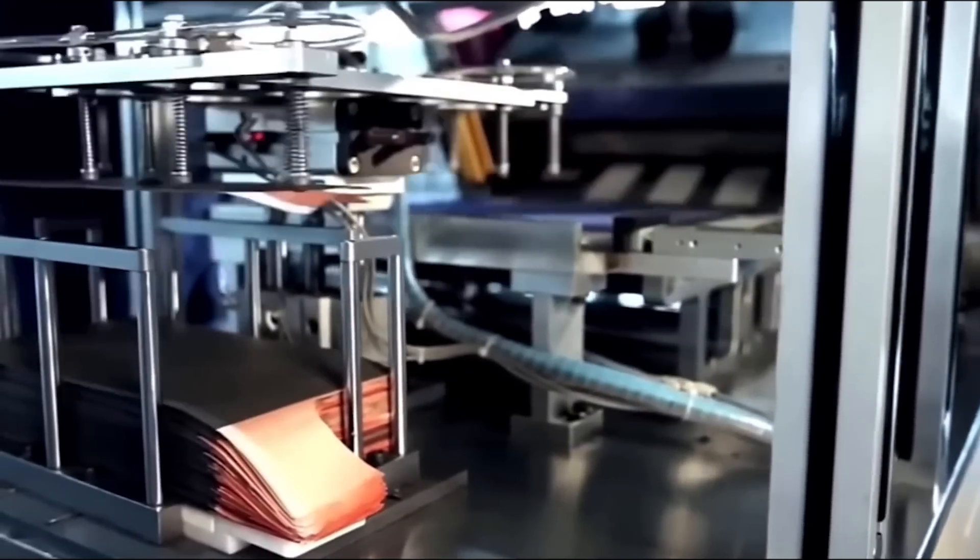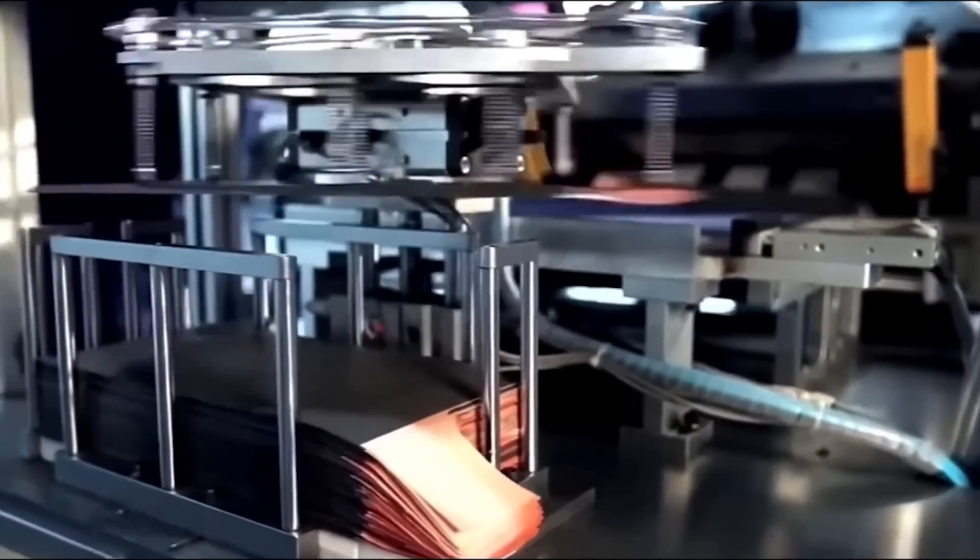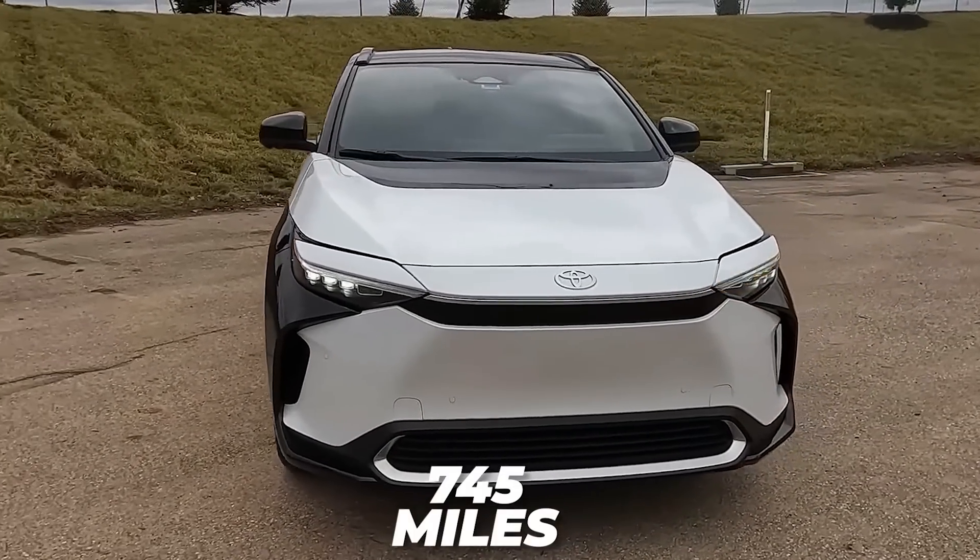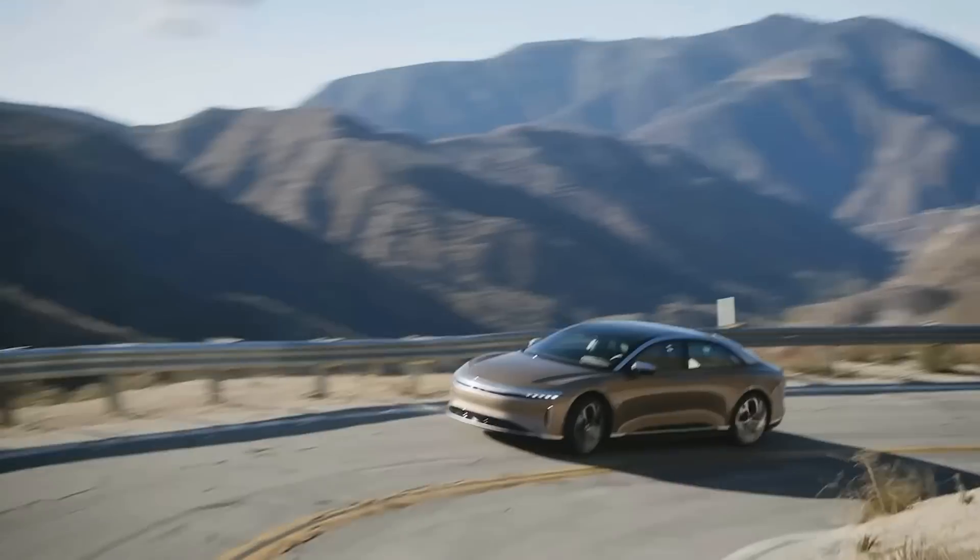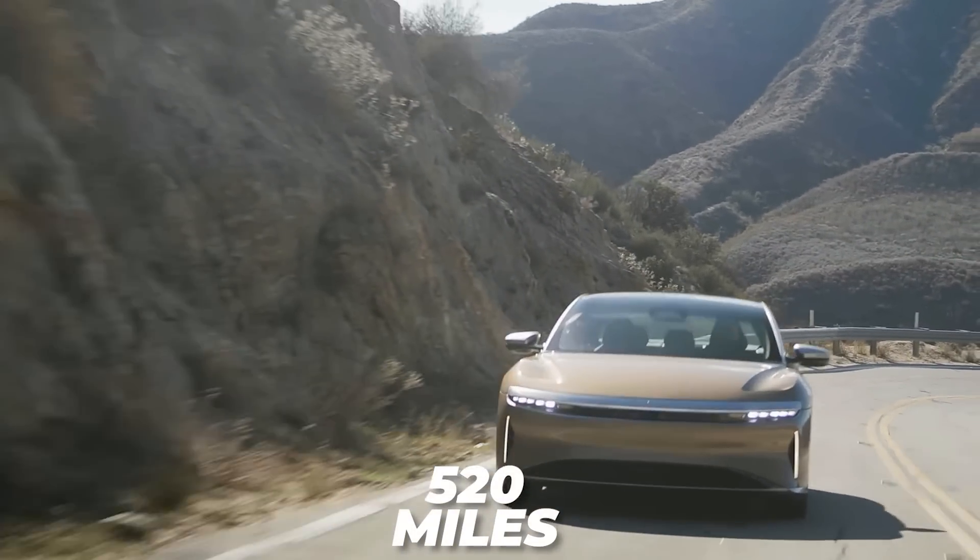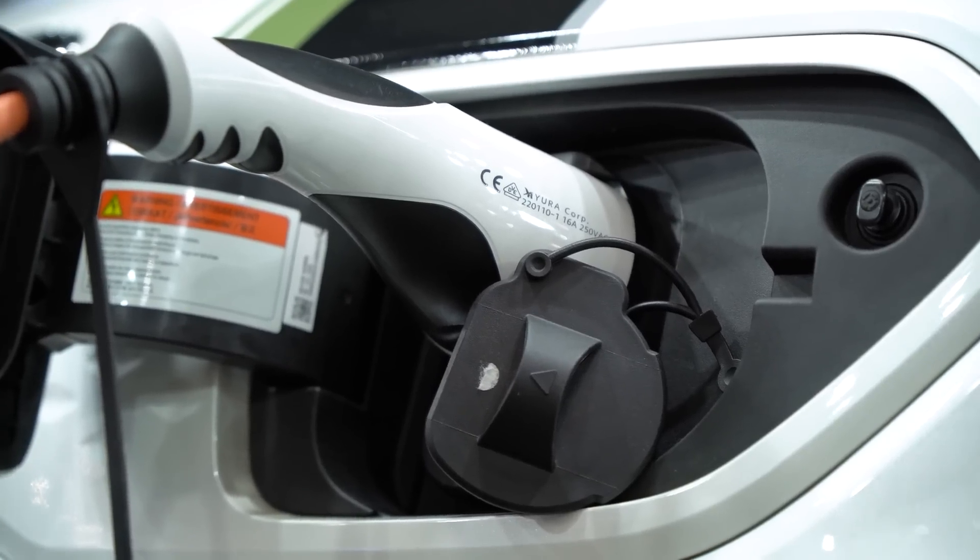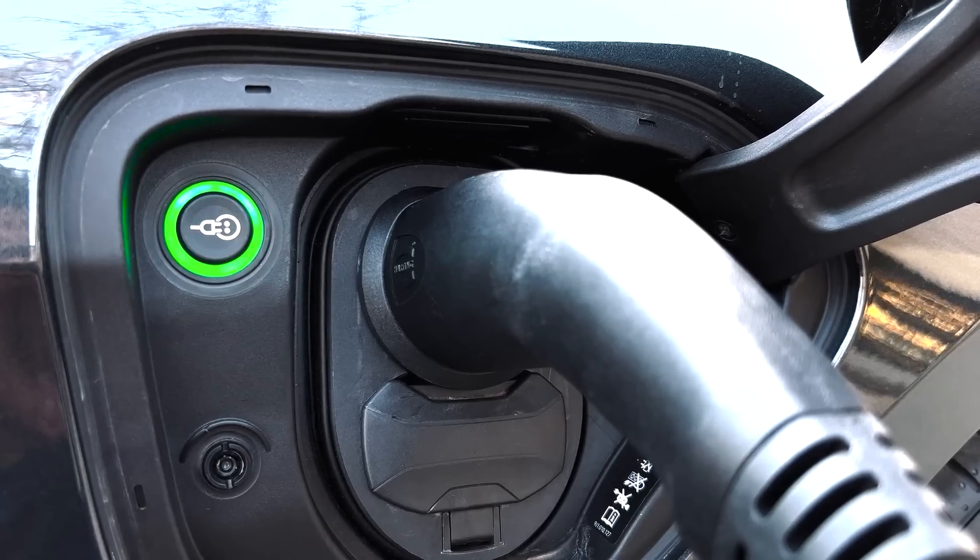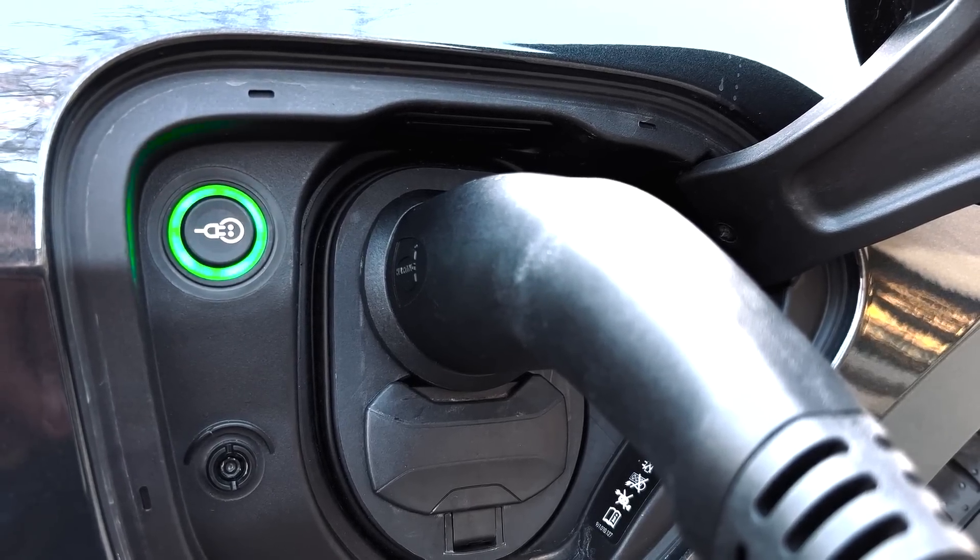When the solid-state batteries become available in 2027 or 2028, Toyota claims that their EVs will achieve an impressive range of 745 miles, surpassing the current record holder, the Lucid Air, which offers a range of 520 miles. Furthermore, Toyota's advanced technology aims to reduce charging time significantly, with the expectation of reaching just 10 minutes for a full charge.